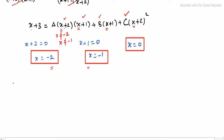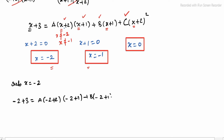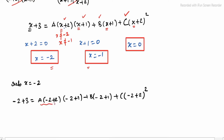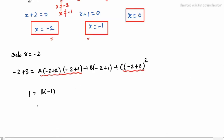Substituting x = minus 2: minus 2 + 3 = A(minus 2 + 2)(minus 2 + 1) + B(minus 2 + 1) + C(minus 2 + 2)². The A term and C term become 0. Left side is 1 = B(minus 1). Finally, B = minus 1.